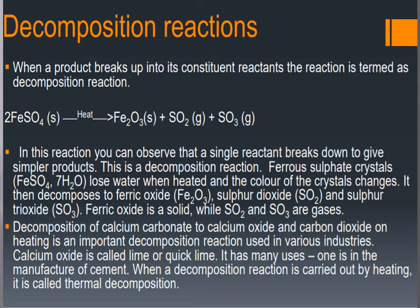Ferrous sulphate crystals lose water when they are heated, and as a result the color of the crystals changes. It then decomposes to ferric oxide, sulphur dioxide, and sulphur trioxide. Ferric oxide is a solid, whereas sulphur dioxide and sulphur trioxide are gases.